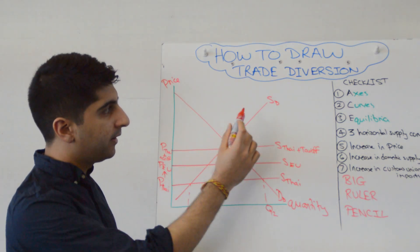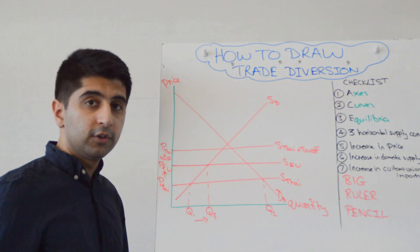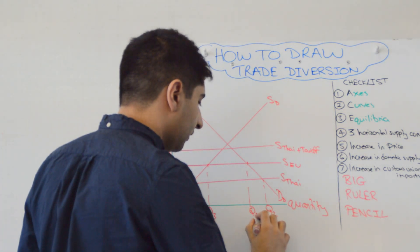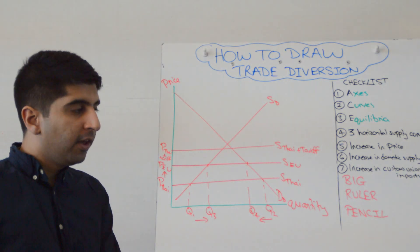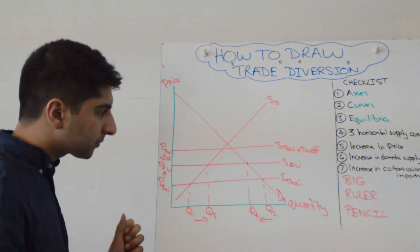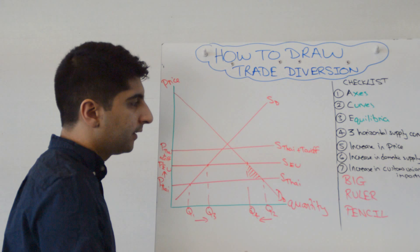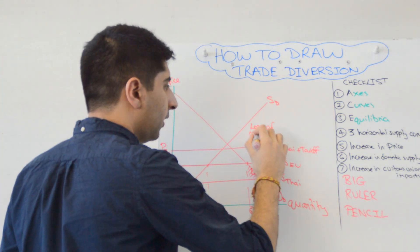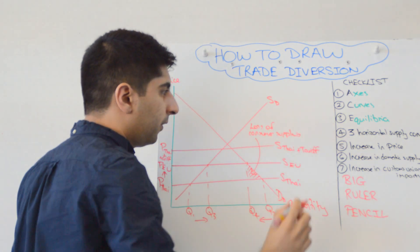And what does it mean? It means that with this higher price, domestic supply has extended from Q1 to Q3, and domestic demand has contracted from Q2 to Q4. We're almost done now with this diagram. All we want to draw now are two little things that we need to shade in. I'm going to shade in this triangle here on the right-hand side, and this represents a loss of consumer surplus. Absolutely.